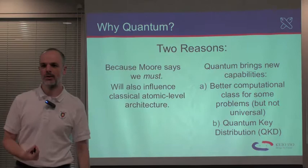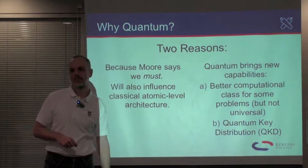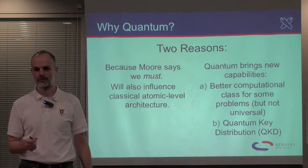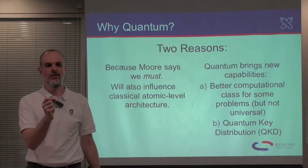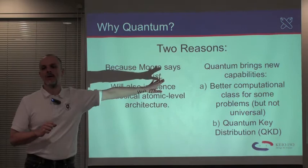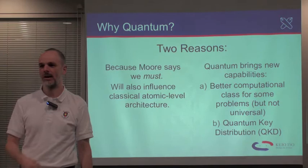Why are we studying quantum computing? The first and most important reason is because of Moore's Law. It says that on roughly a two-year basis, the number of transistors that will fit into a single silicon chip doubles. That process can't go on forever. The shortest part inside of a transistor is what we call the channel length. The channel length today is already down to under 100 atoms long inside of a transistor.